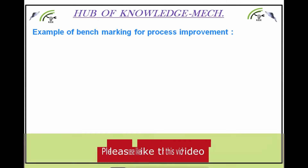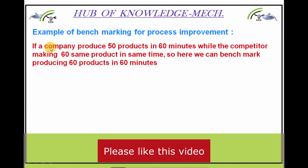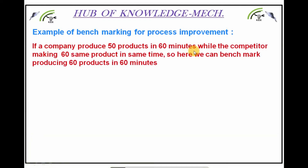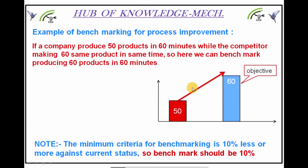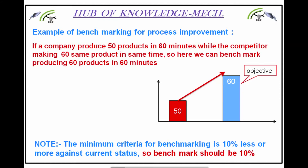Now let's take an example of benchmarking for process improvement. If a company produces 50 products in 60 minutes while the competitor makes 60 products — the same product — in the same time, then here we can benchmark producing 60 products in 60 minutes. Our objective becomes: we have to produce 60 products in 60 minutes. Note: the minimum criteria for benchmarking is 10% — less or more against current status. So after benchmarking, the goal you set must have a minimum 10% increment from the current situation — whether reducing cost or improving process performance.